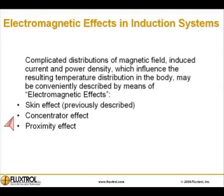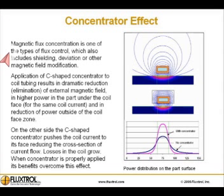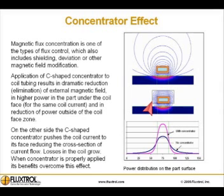Additional effects include the concentrator effect, proximity effect, end effects, and edge effect of slabs and strips. The concentrator effect — magnetic flux concentration — is one of the types of flux control, which also includes shielding, deviation, or other magnetic field modification. Application of a c-shaped concentrator to a coil or tubing results in dramatic reduction or elimination of the external magnetic field.